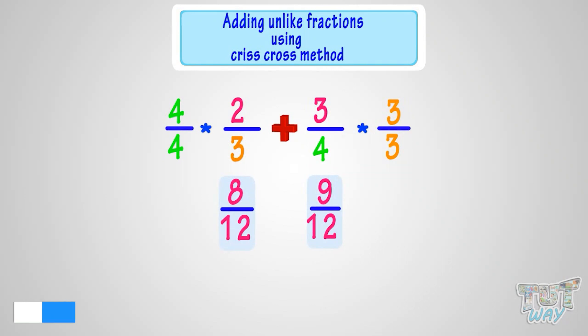Now these two fractions are same as their denominators are same. Now we can add them like like fractions. We just have to add the numerators. Adding 8 and 9, we get 17. So 17 by 12 is our answer.